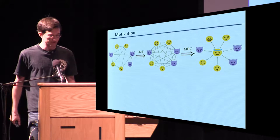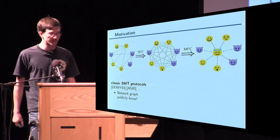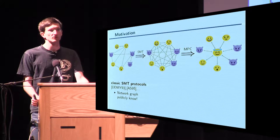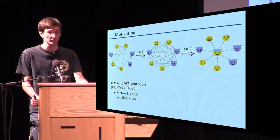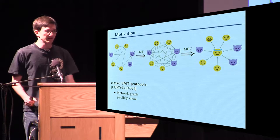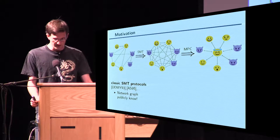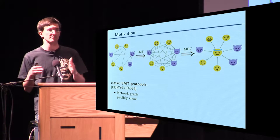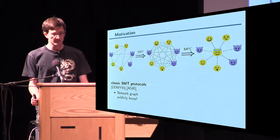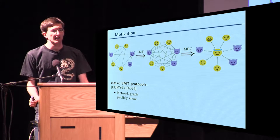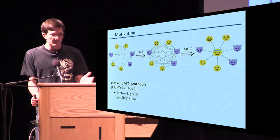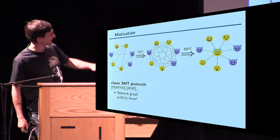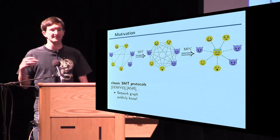If you look at classical secure message transmission protocols, what they have in common is that the network graph of the incomplete network is assumed to be public knowledge, and the protocol may depend on that knowledge. Now, if you consider certain networks like real-life applications, the network might contain confidential information. For instance, if your network is based on a social network — you know certain people and you talk with those — maybe you want to hide that information. So it would be bad to use a classic secure message transmission protocol if you want to hide this information.